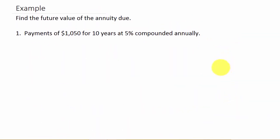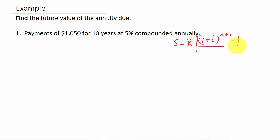Find the future value of the annuity due — so these payments are made at the beginning. The formula is S equals R times 1 plus I to the N plus 1, minus 1 over I, minus R.